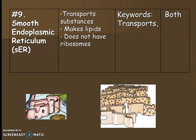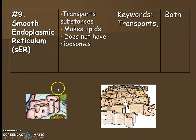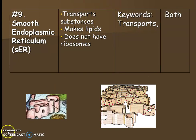Finally, the smooth endoplasmic reticulum is very similar to the rough ER, but it does not have ribosomes — which is why it has that smooth texture. Because it lacks ribosomes, instead of transporting proteins it transports lipids. Great job everyone — that was a long one!